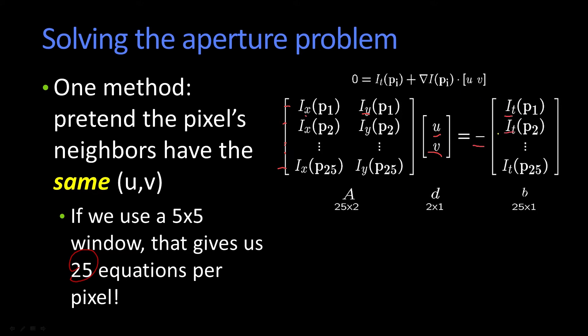and here is the temporal derivatives at each of those points. So I can write that as AD equals B, where D is this displacement vector UV, and B is just this 25 by 1 vector that is essentially the negative of all the temporal derivatives. So we have this equation AD equals B, and it's got 25 equations and two unknowns.